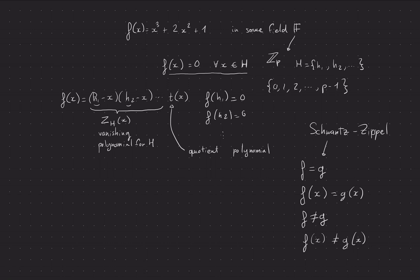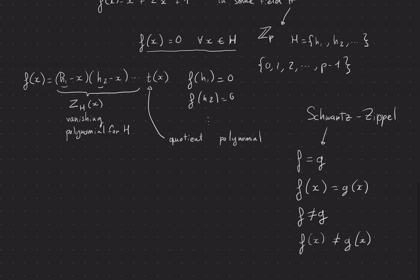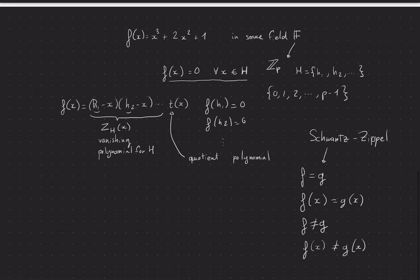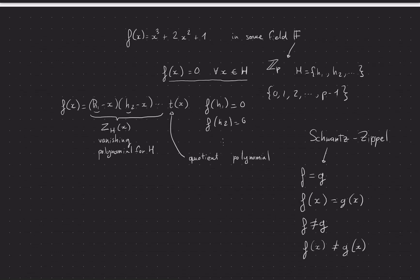And actually it says that basically it's based on the degree of f and g. And if the degree of these polynomials are quite small compared to the size of the field, then we're good. There's a negligible probability that f(x) will be equal to g(x) for some random x.